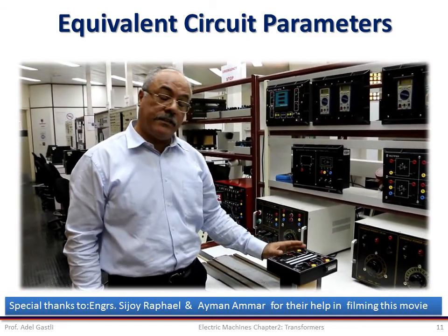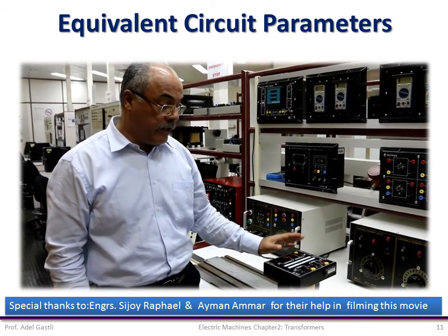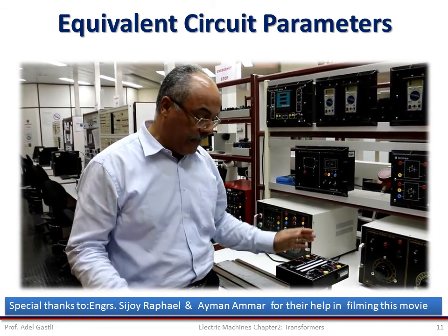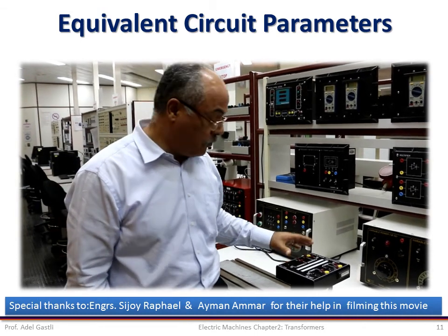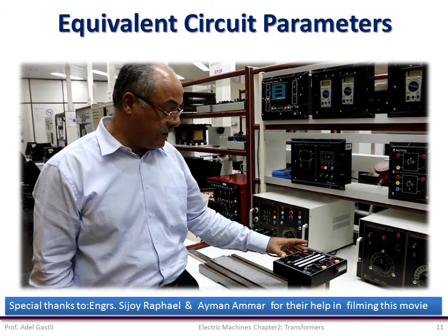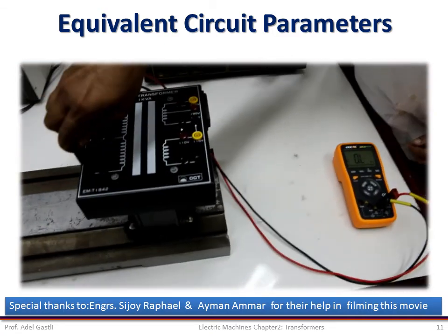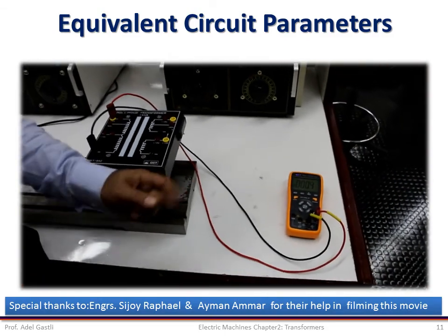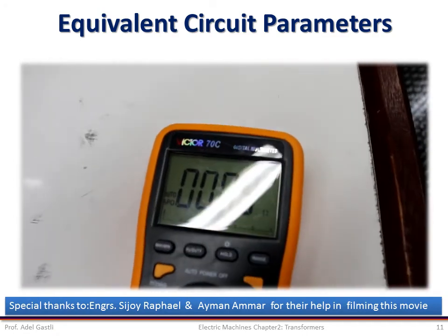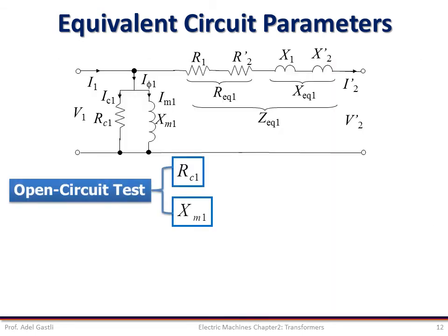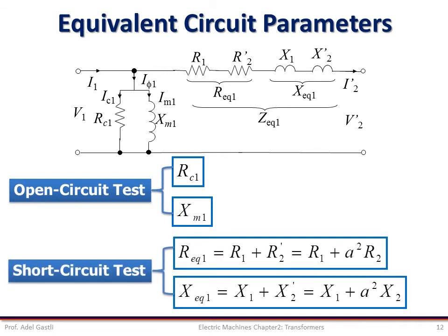Note that both methods should give the same results. After doing the open circuit test and the short circuit test, there is one more measurement needed to complete all measurements for finding all equivalent circuit parameters. The next measurement is to measure the primary winding resistance R1. For that we use a normal ohmmeter, connect it to the terminals of the primary winding, and take the readings of the resistance. After calculating RC1 and XM1 from the open circuit test and R_equivalent1 and X_equivalent1 from the short circuit test, we can deduce the other equivalent circuit parameters R1, R2, X1, and X2.